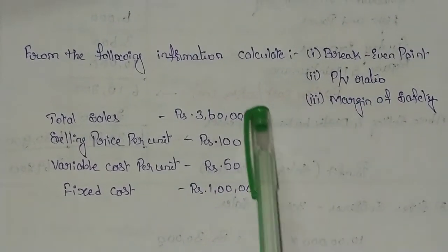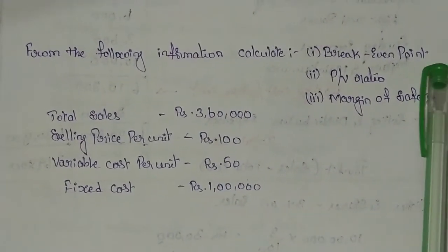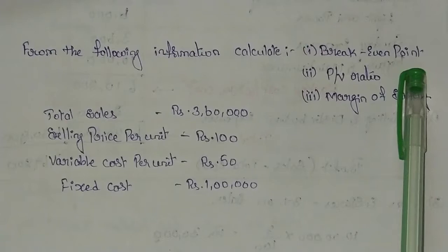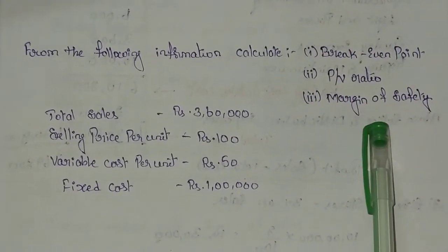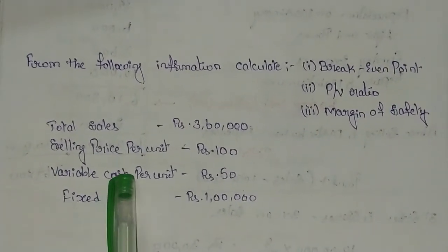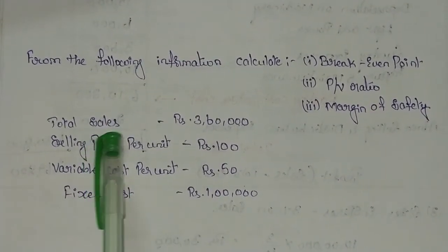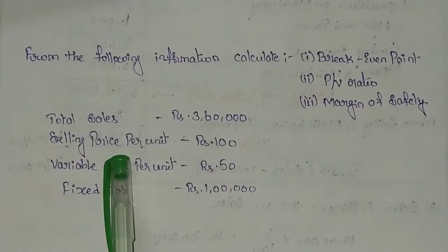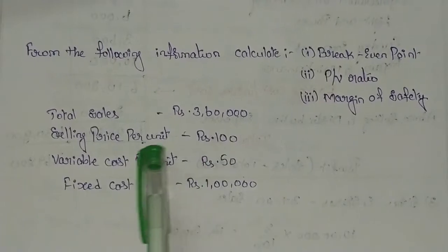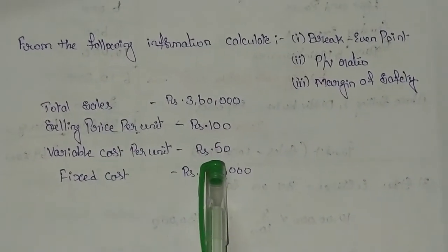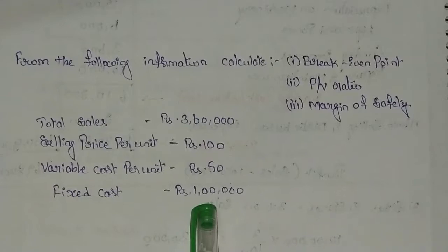With the information provided, you should go for calculating breakeven point, profit volume ratio, and margin of safety. The information given: total sales 3,60,000; selling price per unit 100 rupees; variable cost per unit 50 rupees; fixed cost is rupees 1 lakh.